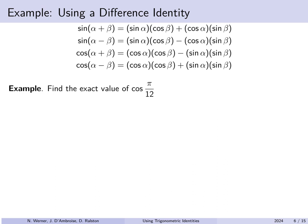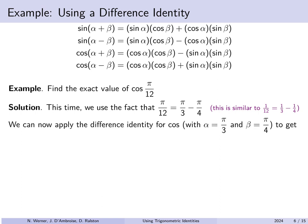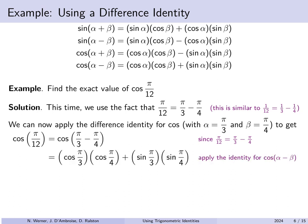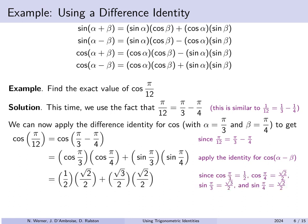Next, let's find the exact value of the cosine of pi over 12 radians. Now pi over 12 is the difference pi over 3 minus pi over 4, both of which we know the sine and cosine of. Applying the cosine difference identity with alpha equal to pi over 3 and beta equal to pi over 4, we get cosine pi over 3 times cosine pi over 4 plus sine pi over 3 times sine pi over 4. Substituting the values one half, root 2 over 2, root 3 over 2, and root 2 over 2 gives us the same value: root 2 plus root 6 divided by 4.